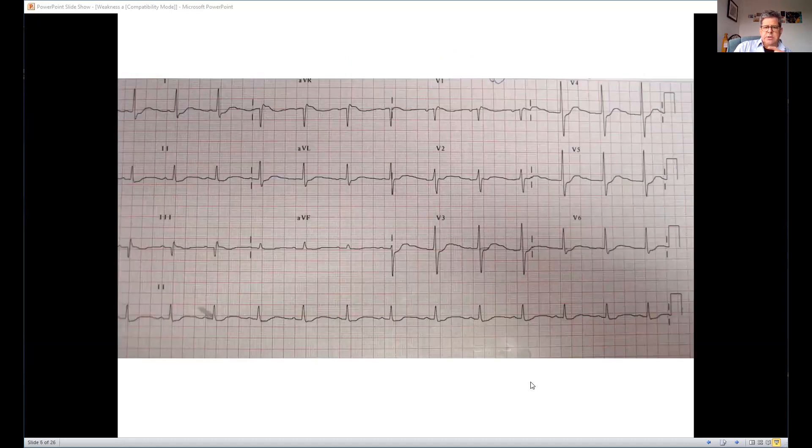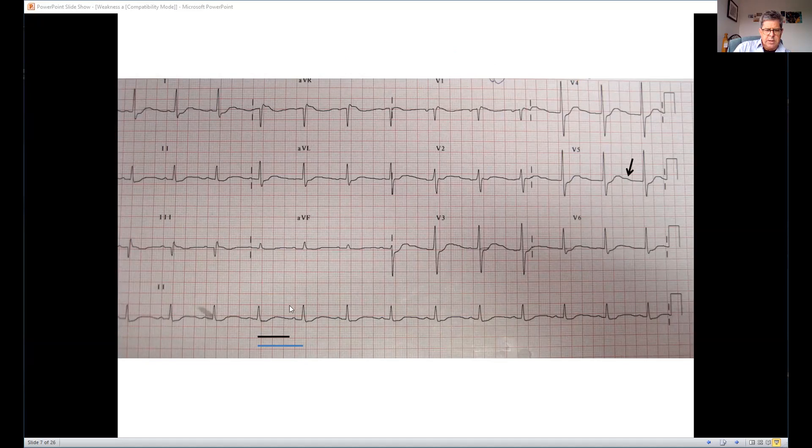They do an ECG which is not entirely normal. You can see this is sinus rhythm, normal axis. But when you look at it, you can see that the QT is prolonged. So it's more than half of the distance between the RR intervals. And there's a U-wave. If you recall, U-waves are caused by a number of things. Hypercalcemia, as you saw from a recent earlier talk, and also hypokalemia.